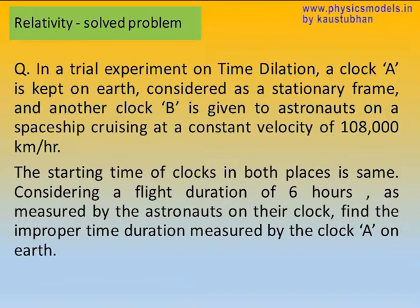That makes those astronauts an inertial frame. We have to find out the improper time interval as measured by the stationary observer on clock A, given a flight duration of 6 hours.